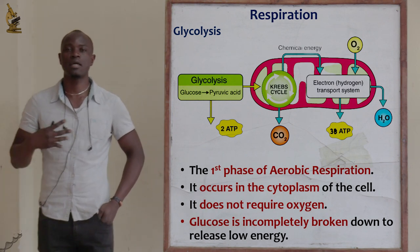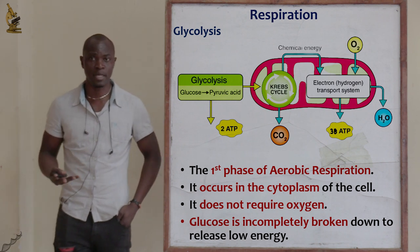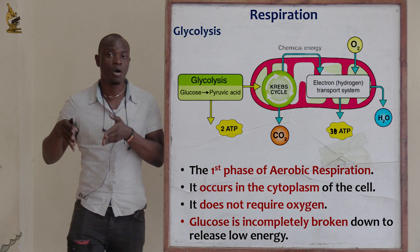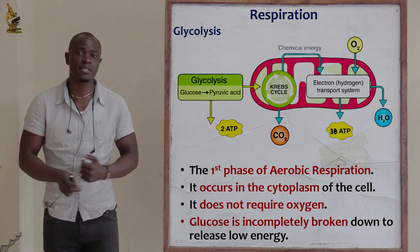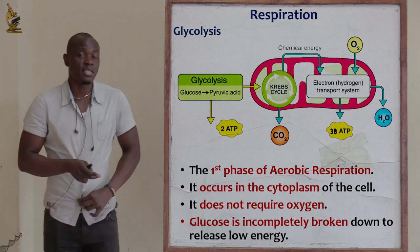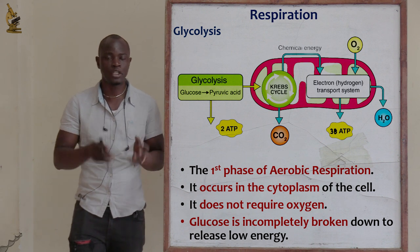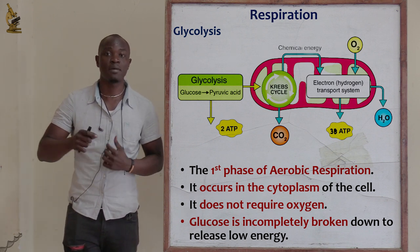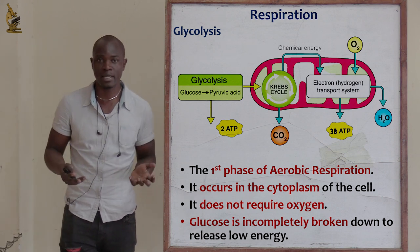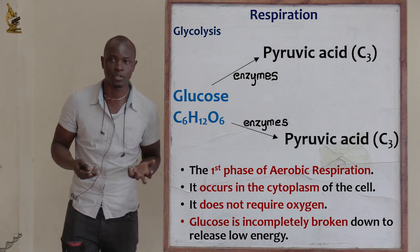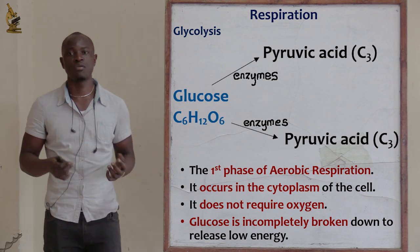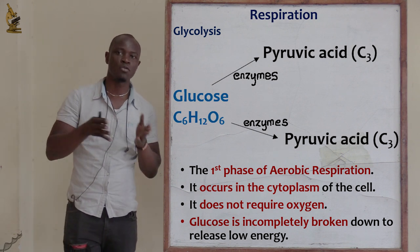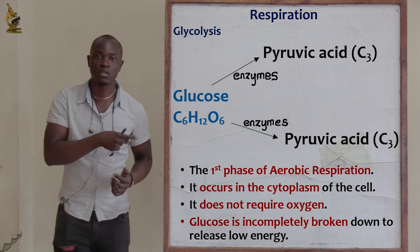The first phase is glycolysis. Glycolysis is the first phase of aerobic respiration that takes place in the cytoplasm of the cell. Before glucose can be broken down, it is first activated through the addition of energy from ATP and phosphate groups. This process is referred to as phosphorylation, which involves the breakdown of glucose into two molecules of a three-carbon compound called pyruvate or pyruvic acid.